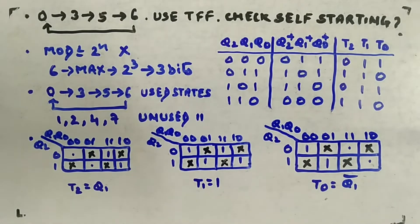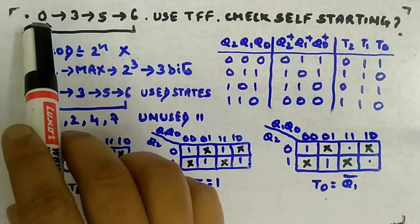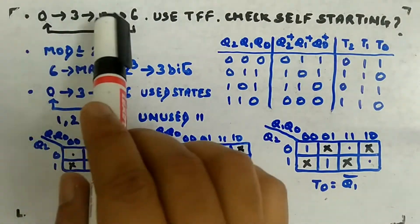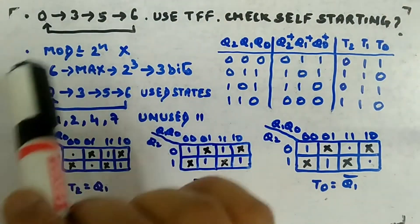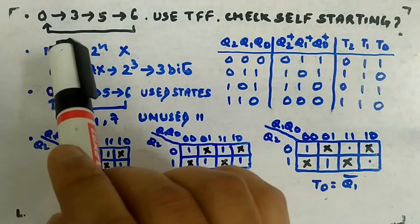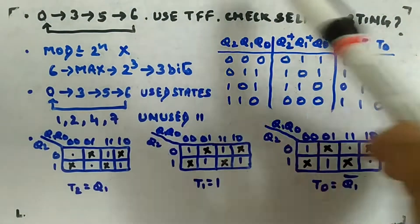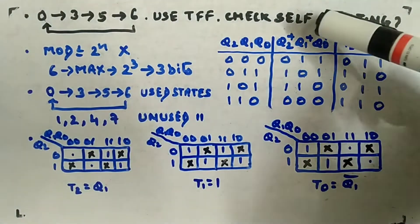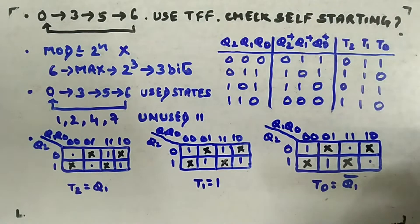Now let's look at another example. The sequence given is 0, 3, 5, 6, 0, 3, 5, 6, 0, 3, 5, 6. You have to design a synchronous counter using T flip-flops and check whether the counter is self-starting or not.